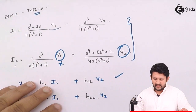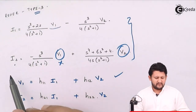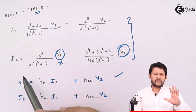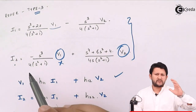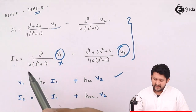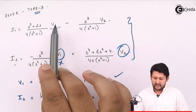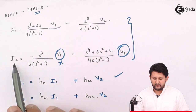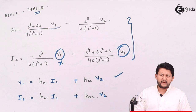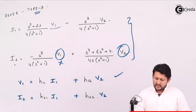This type 4 sum is very similar to the type 3 sum we did for Y parameters, so I'm assuming you know the Y parameter equations. After getting the Y parameter equations — I1 in terms of V1 and V2, and I2 in terms of V1 and V2 — I need to obtain the hybrid parameters by modifying those equations.